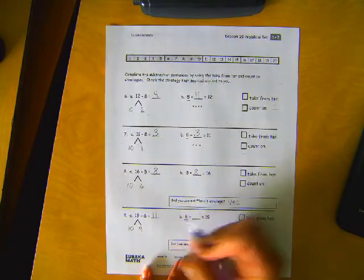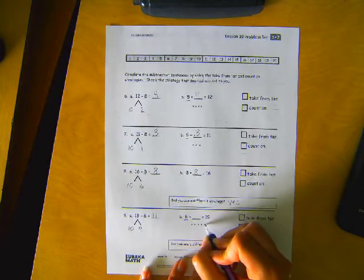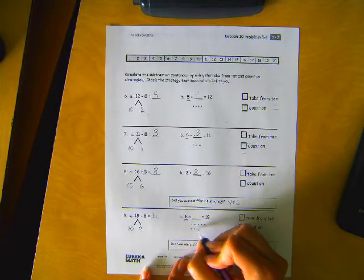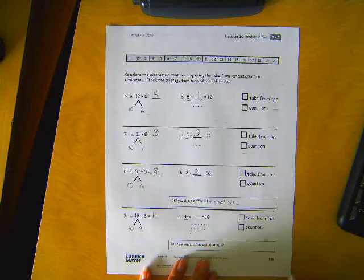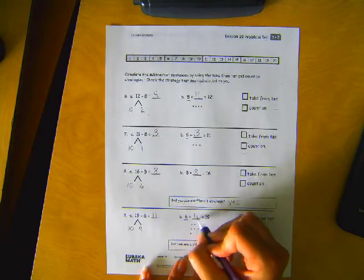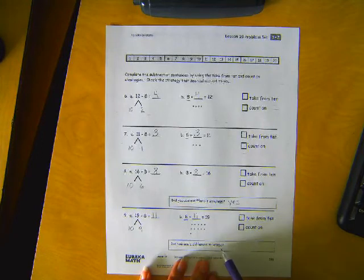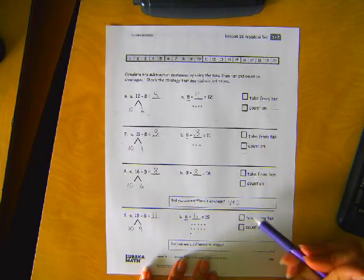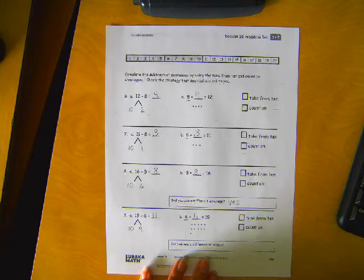Or we can count on. So 8, 9, 10, 11, 12, 13, 14, 15, 16, 17, 18, 19. That took 11 dots. Or did you use a different strategy? Which one was easier for you? Take from 10 or counting on? Check which one was easiest for you, or if you used a different strategy, let me know what that was.